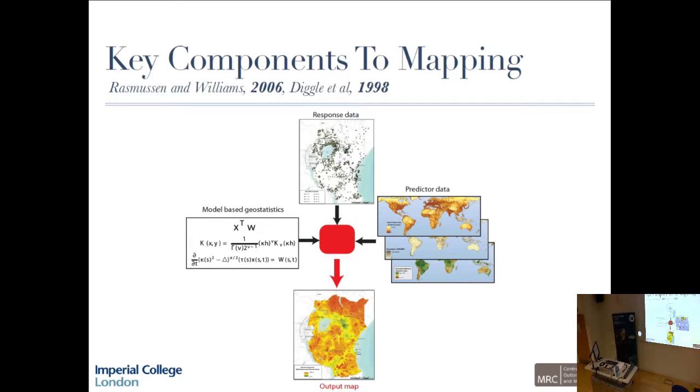For those unfamiliar to mapping, I wanted to talk through the key components to mapping introduced by Peter Diggle and Rasmussen and Williams. Those more used to machine learning methods will instantly recognize this as a supervised learning problem. First thing you need is some response data, geo-located response data at some locations with some measure of interest, for example malaria prevalence. Then aside from that, you collect a huge amount of satellite imagery and I'll show some pictures.